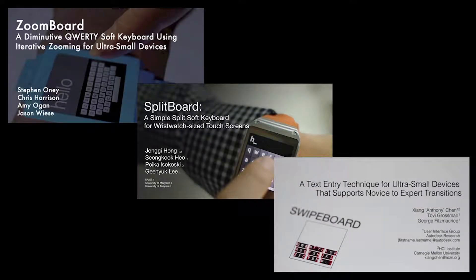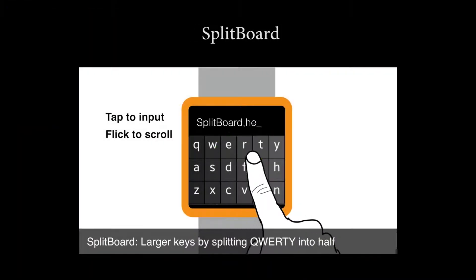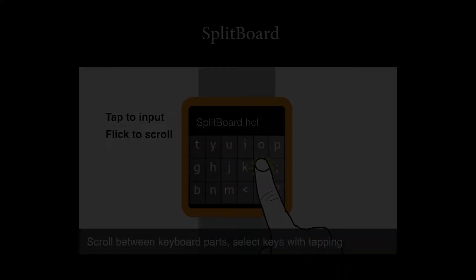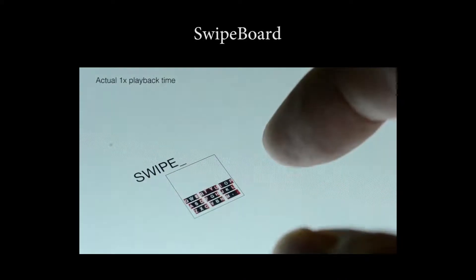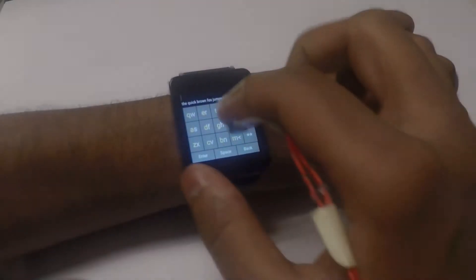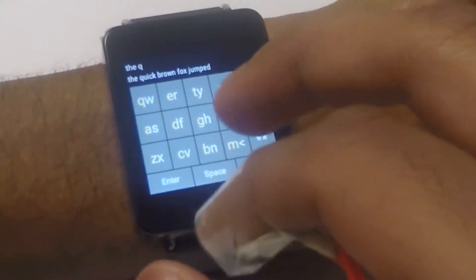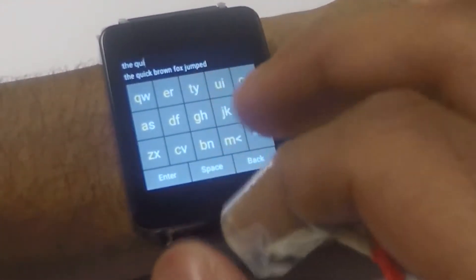Existing miniature screen typing techniques rely on two-step selection processes which are cumbersome. We propose dual key, a text entry technique for miniature screens that uses finger identification.